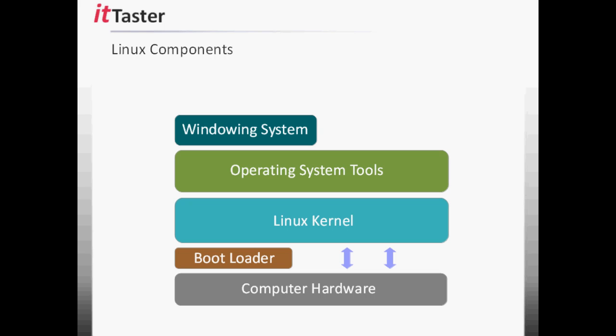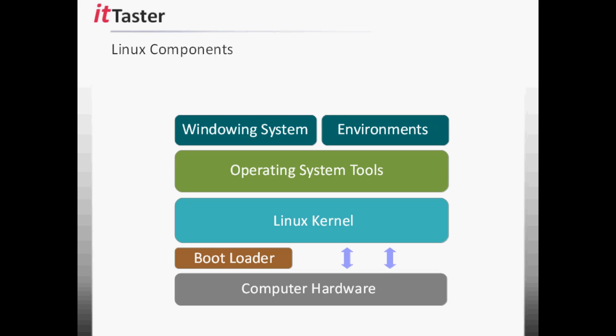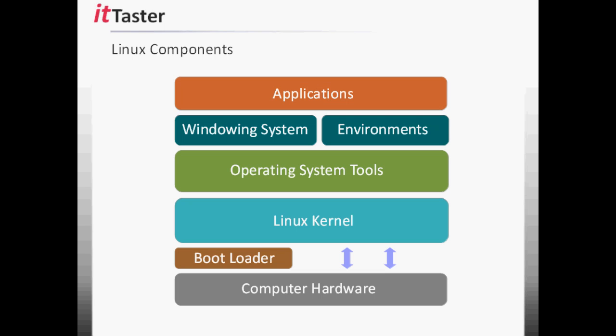Another Linux component is a windowing system, which is the basis of a graphical user interface, or GUI. Not all Linux distributions include a GUI, and Linux is not reliant on one by any means. The Linux shell is an extremely powerful environment, and it's important to get to know the Linux shell and its commands. A windowing system supports desktop environments — different styles of GUI that enable us to run graphical versions of tools, utilities and applications. And finally, software applications enable us to do things like surf the web, email our friends and much more.